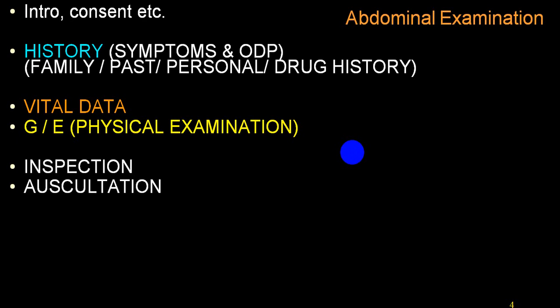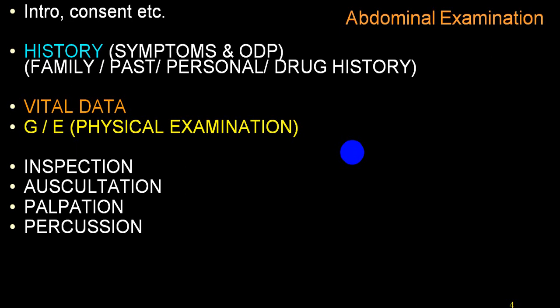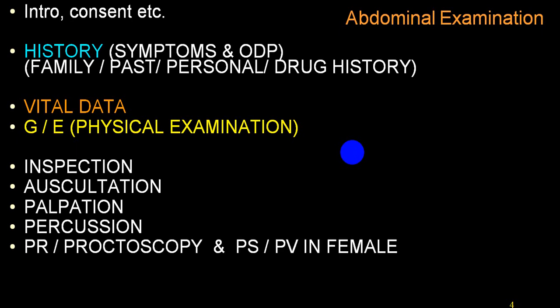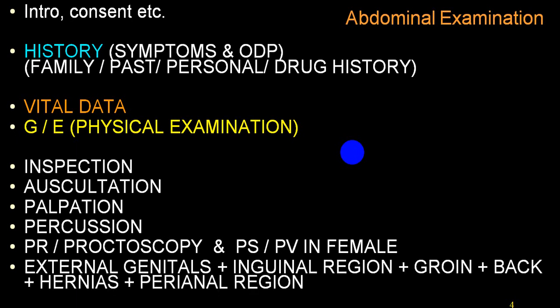Inspection should be followed by auscultation before we do palpation and percussion, so that you can pick up any disturbances regarding the bowel sounds. Normally we always do inspection, palpation, percussion, and auscultation last — as far as respiratory and cardiovascular systems are concerned. But in abdominal examination, inspection is followed by auscultation, then palpation and percussion. PR, proctoscopy, and in female additionally per speculum and per vaginal examination should be done. External genital examination, inguinal region, groin, back, hernial orifices, and examination of the perianal region are all part of abdominal examination.